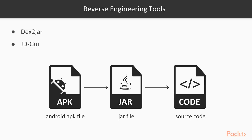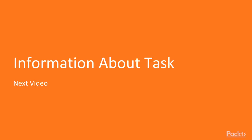First we will use the dex2jar tool, which will convert the .apk file into a .jar file, and then later I will use the JD-GUI tool, which will open up the source code using that JAR file. This is the first process and this is the second process — these are the reverse engineering tools we are going to use in this section. This is all about the basic information about reverse engineering. In the next video I'm going to show you what the task is and how we are going to proceed. Thank you so much.